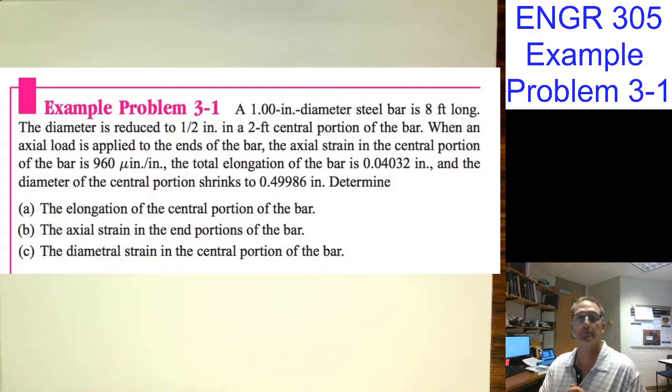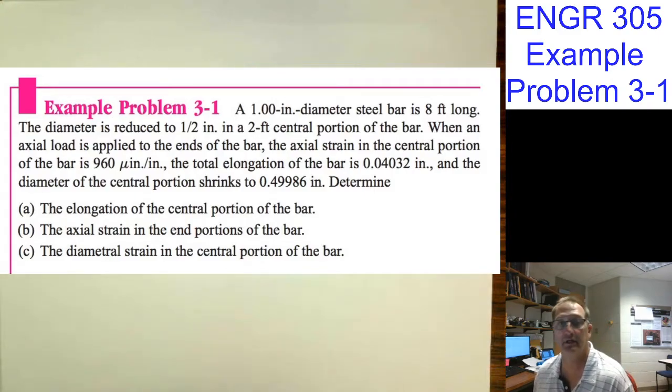Engineering 305, example problem 3-1. A one-inch diameter steel bar is eight feet long. The diameter is reduced to a half inch in a two-foot central portion of the bar. When an axial load is applied to the ends of the bar, the axial strain of the central portion is 960 micro-inches per inch.